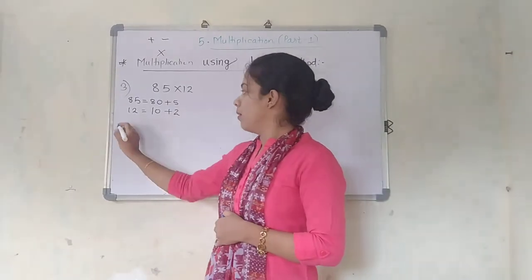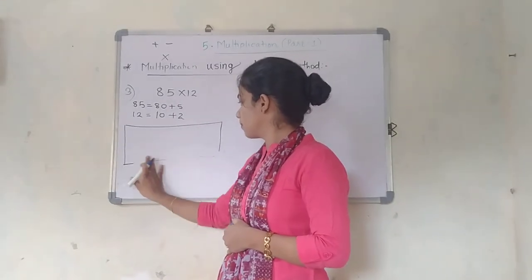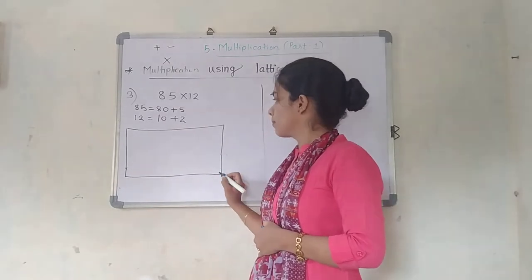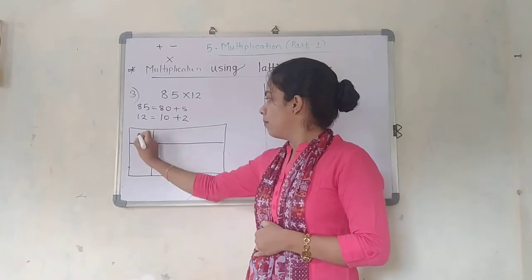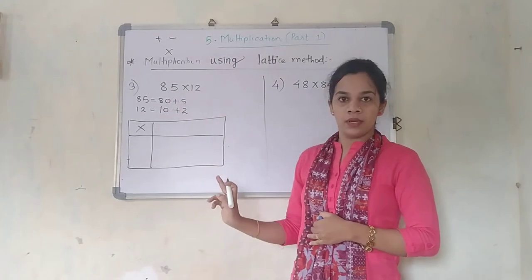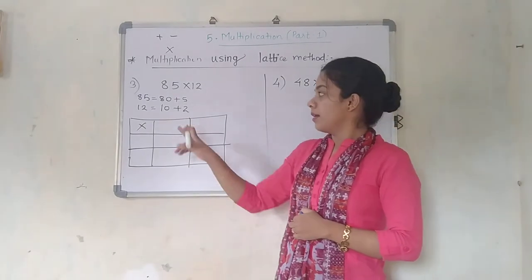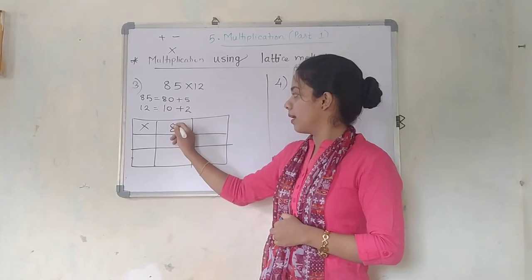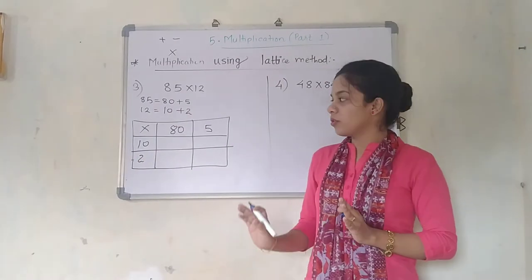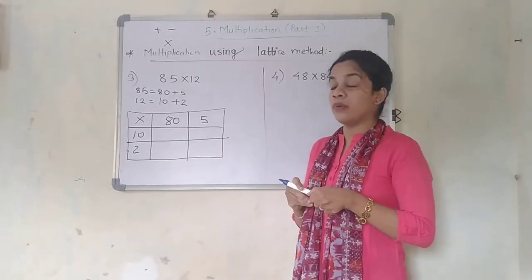Now we are going to form the table — that is also called the lattice method. See why I am forming the table. Multiplication will be written in between. How many numbers are here? 1, 2, 3, 4 — so divide it like this. 80 and 5 will come over here, and 10 and 2 will come over here. You have seen the formation — how I have written it, what I mentioned, and where I placed it. Now just see the further thing: how we are going to multiply it.